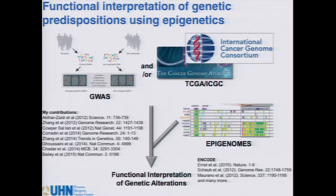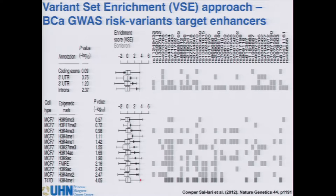With regards to merging GWAS data, TCGA, and ICGC data with the epigenome, we've done a lot of work, with publications that parallel many key ENCODE publications from around 2012. One tool we've developed is called VSE, for Variant Set Enrichment Analysis. It's specifically geared towards identifying the enrichment for any given genomic feature at risk loci ascribed to a specific disease. The minute you have more than one risk region for a specific disease, you can run VSE.